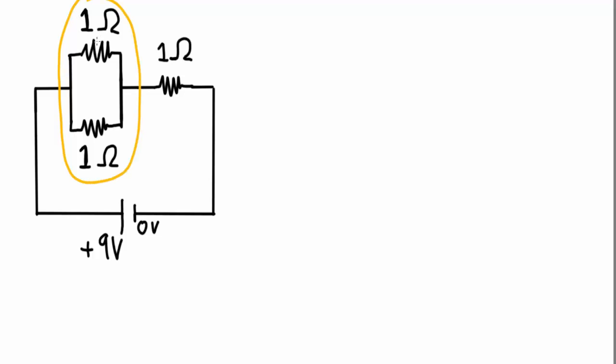So I'm going to call the total resistance of these two resistors RP, which stands for resistance parallel, but you could call it anything you wanted to. And using the formula for resistance in parallel, I get 1 over RP equals 1 over 1 ohm plus 1 over 1 ohm. So in this case,